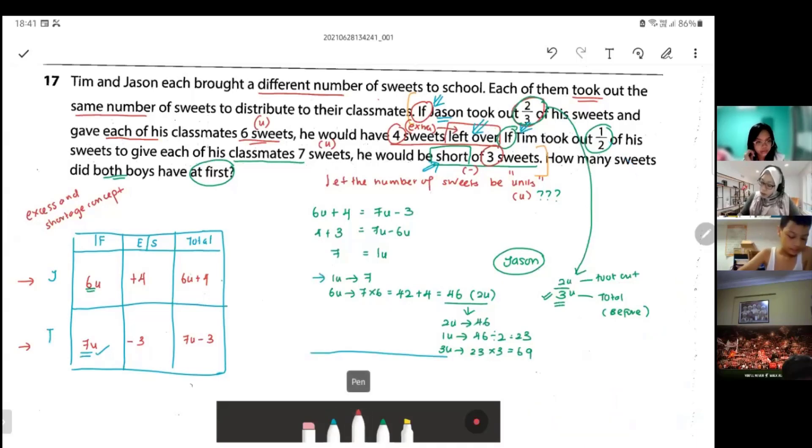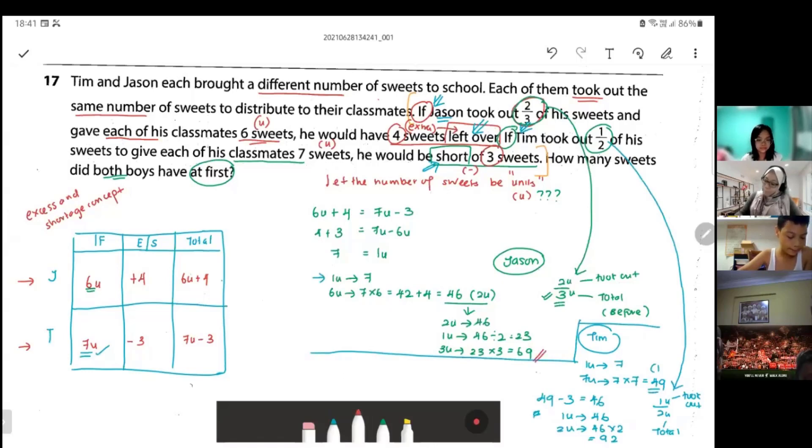What's my total? You can see from here 69 and my 92. The total I put here is equals to 69 plus 92 equals to 161. This 49 is not done yet, why? Because I need to minus three. Once I minus three, that is what he took out. He took out only one unit. So this 46 is actually my one unit. That's now for Jason, we need to add in because there's extra four. For Tim, not enough shortage of three, that's why I minus three to get my one unit. Then I find two units, why two units? Because that's my total. My answer is 161.